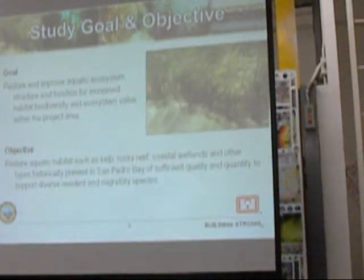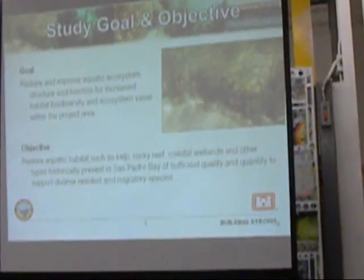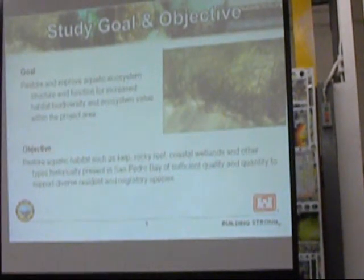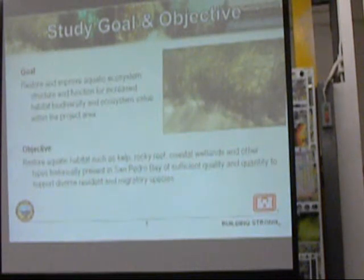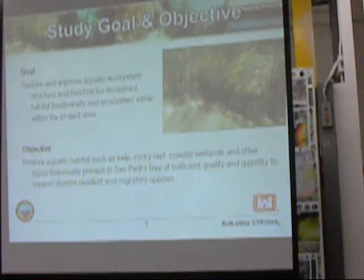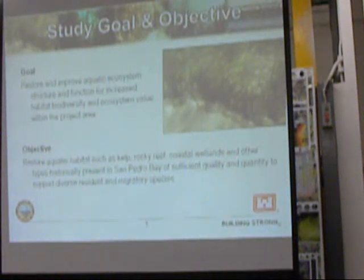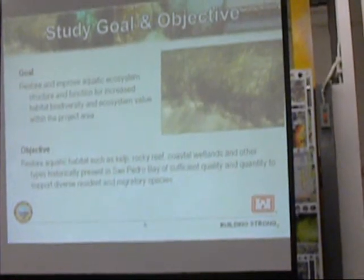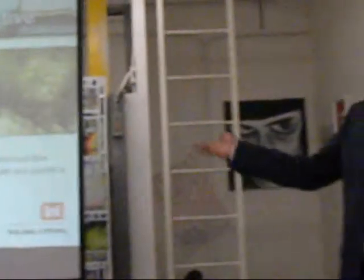Study goals and objectives — it's important to frame the conversation in the context of the goals and objectives. The goal is to restore and improve aquatic ecosystem structure and function for increased habitat biodiversity and ecosystem value within the project area. Basically, it's ecosystem restoration. The objective is to restore the aquatic habitat, which includes a lot of those habitat types that you saw on the previous slide.